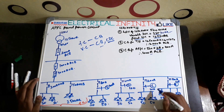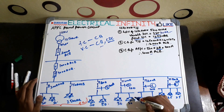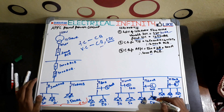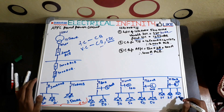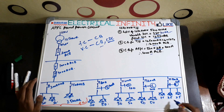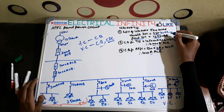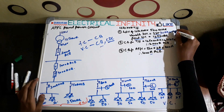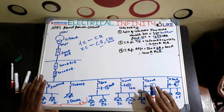The variable capacitor distribution is: 100 + 100 + 100 = 300 kVAr, plus 75 kVAr, totaling 375 kVAr of variable capacitors. This is how the capacitor designing is done.